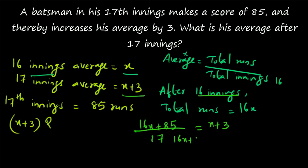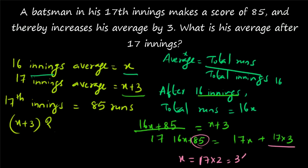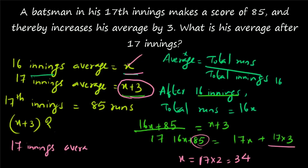From 16x plus 85 divided by 17 equals x plus 3, we get 16x plus 85 equals 17x plus 51. So x equals 85 minus 51, which is 34. His average after 16 innings is 34. The question asks for the average after 17 innings, which is x plus 3, so the answer is 34 plus 3 equals 37.